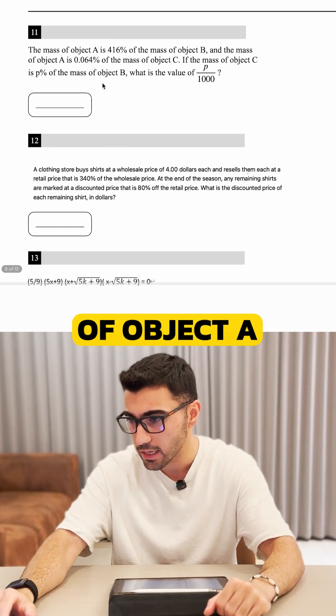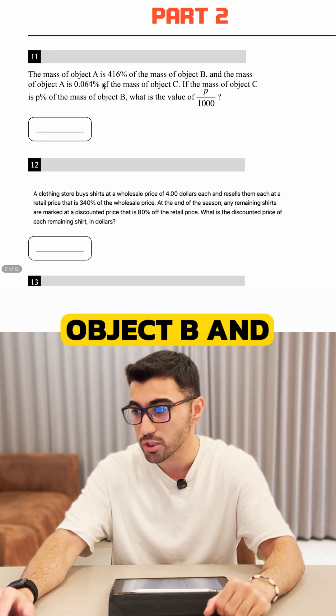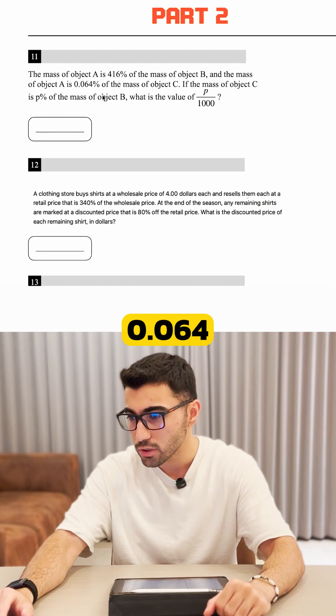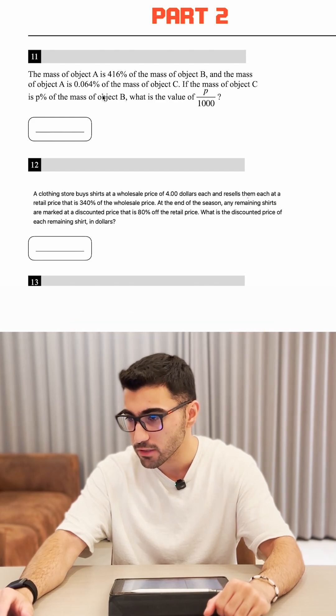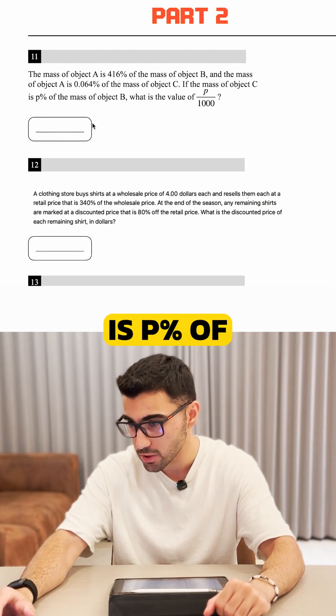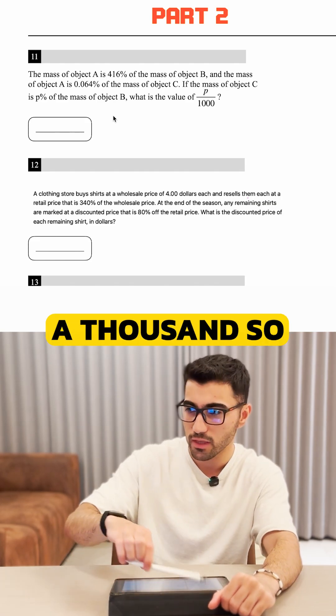Question number 11 says the mass of object A is 416% of the mass of object B, and the mass of object A is 0.064% of the mass of object C. If the mass of object C is P percent of the mass of object B, what is the value of P over a thousand?